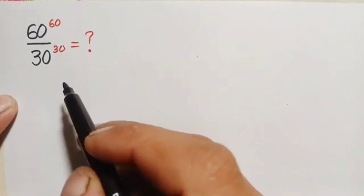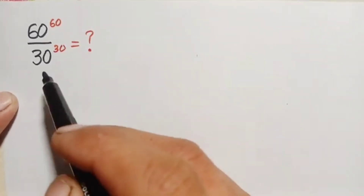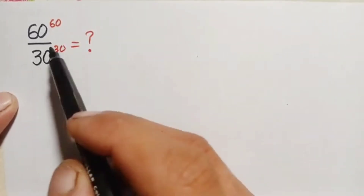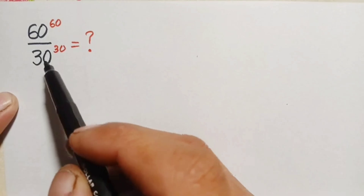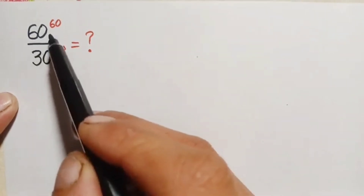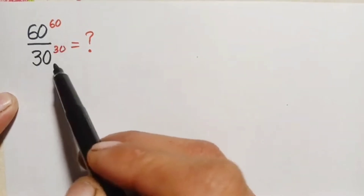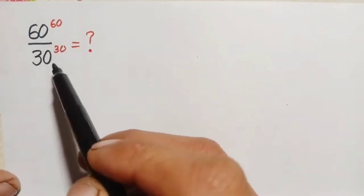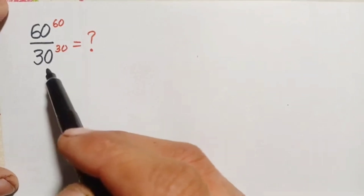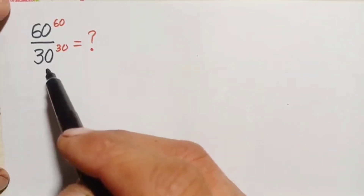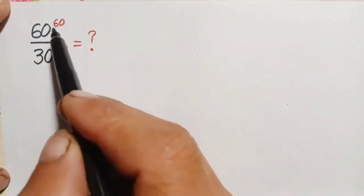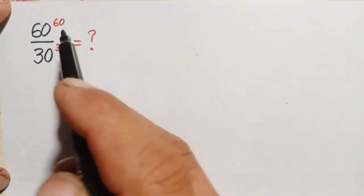Hello everyone, you are welcome. We will find the value of this interesting math problem: 60 raised to power 60, divided by 30 raised to power 30. I will solve this problem using two different methods. In the first method, we will try to factorize.